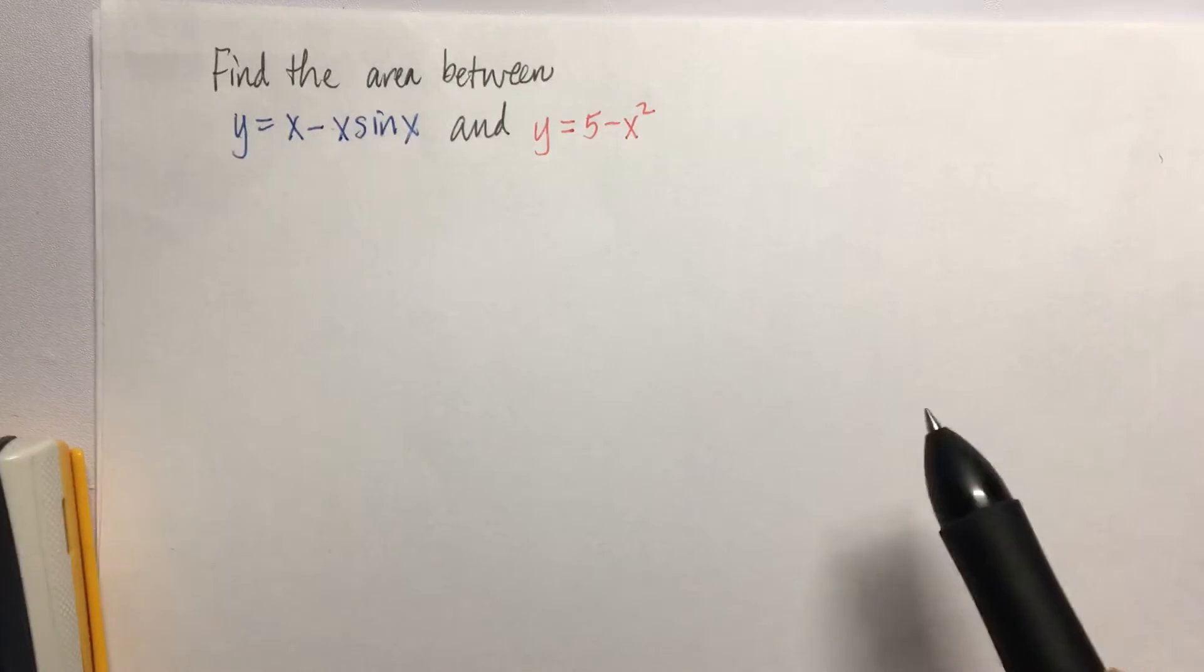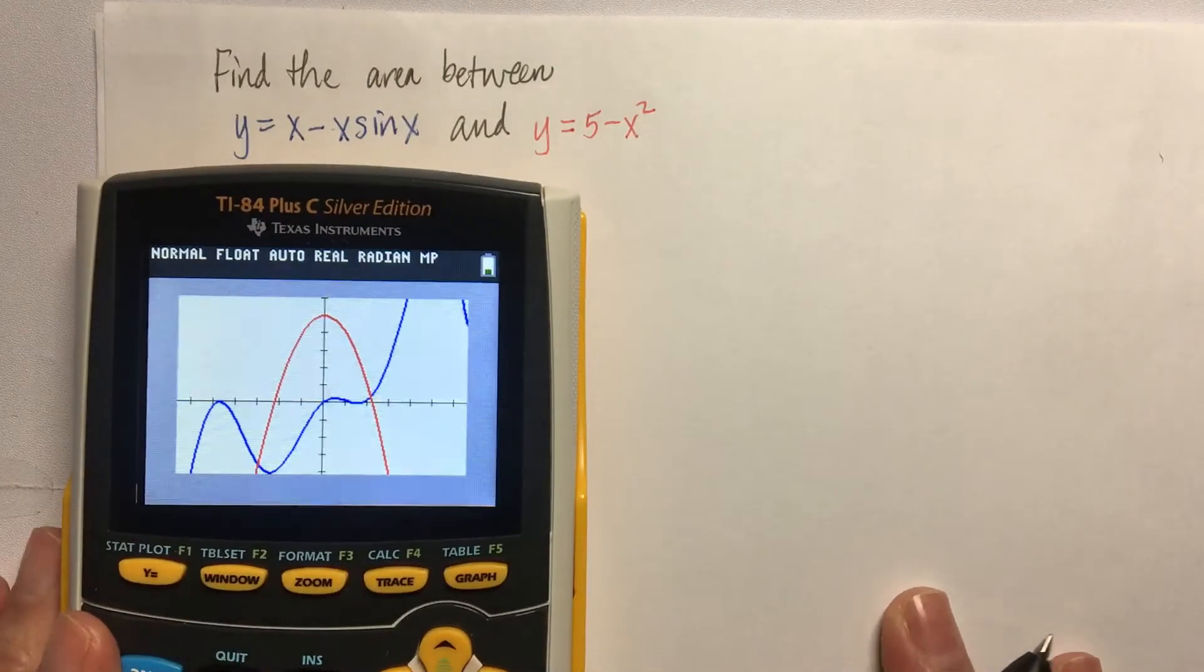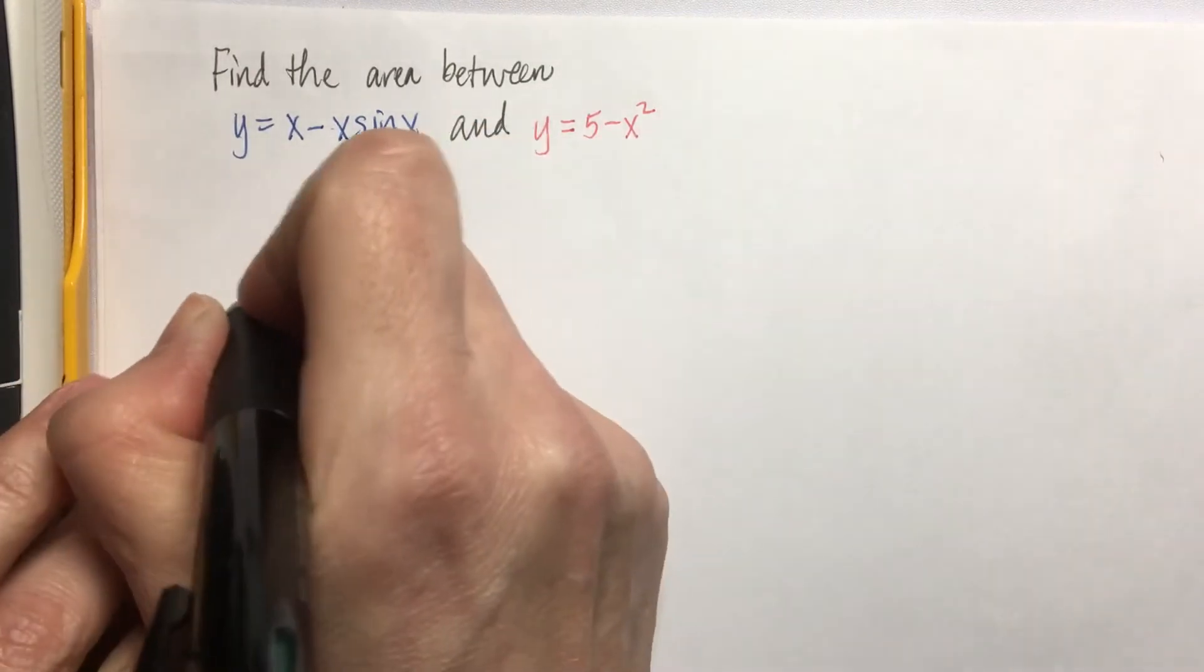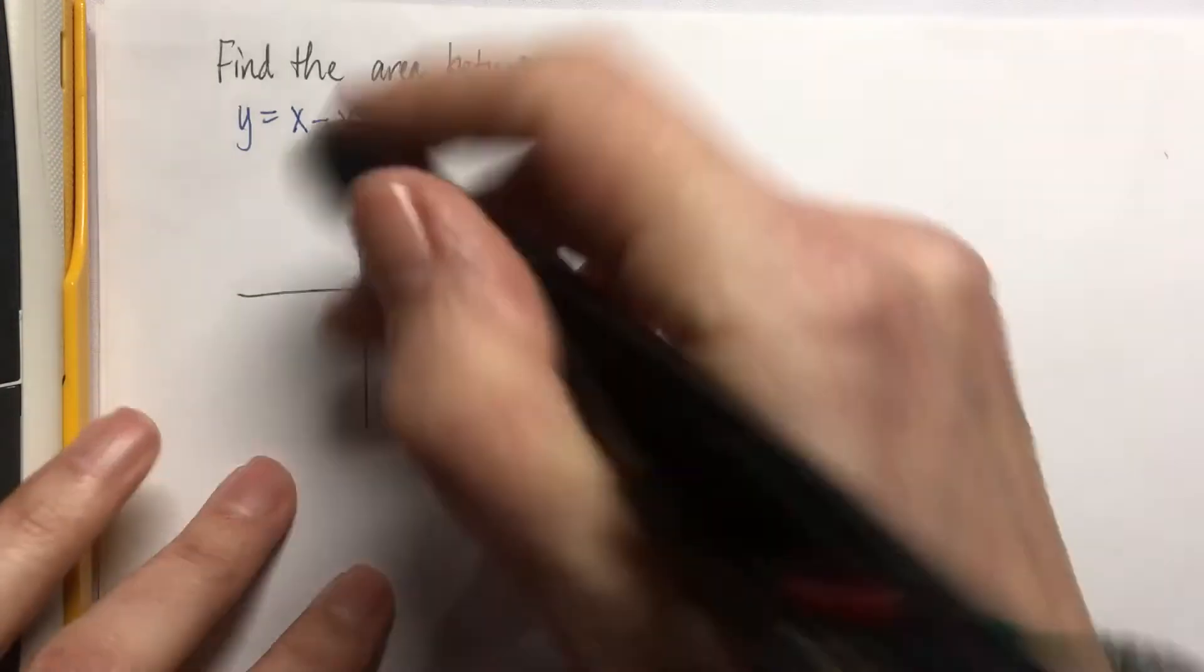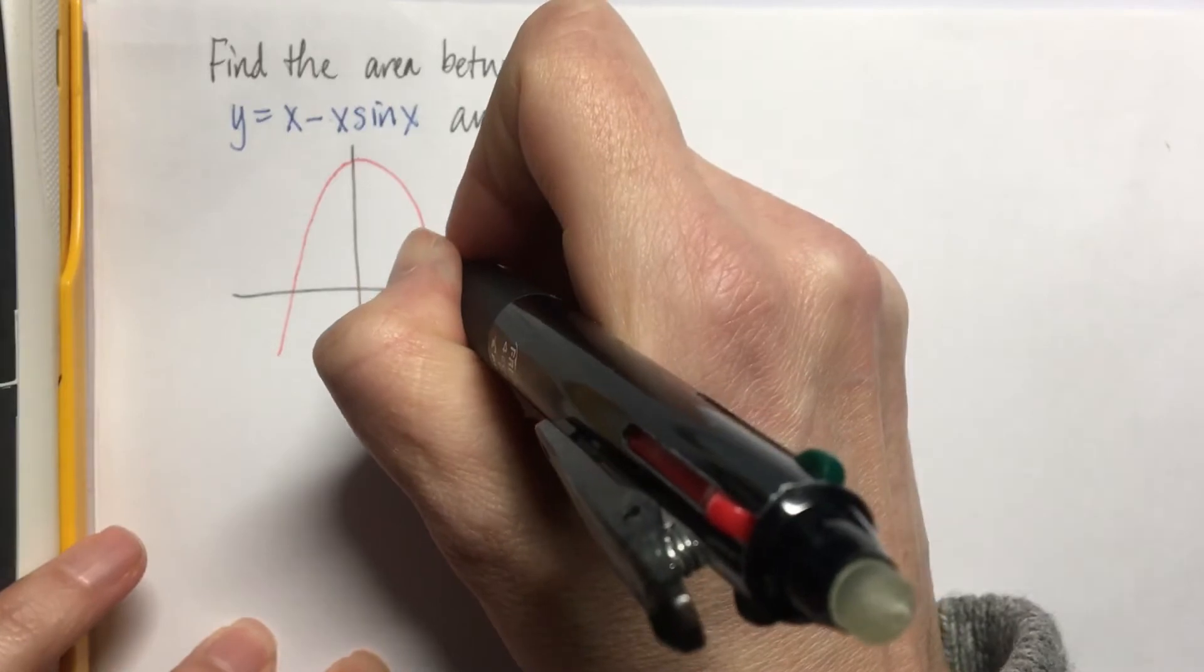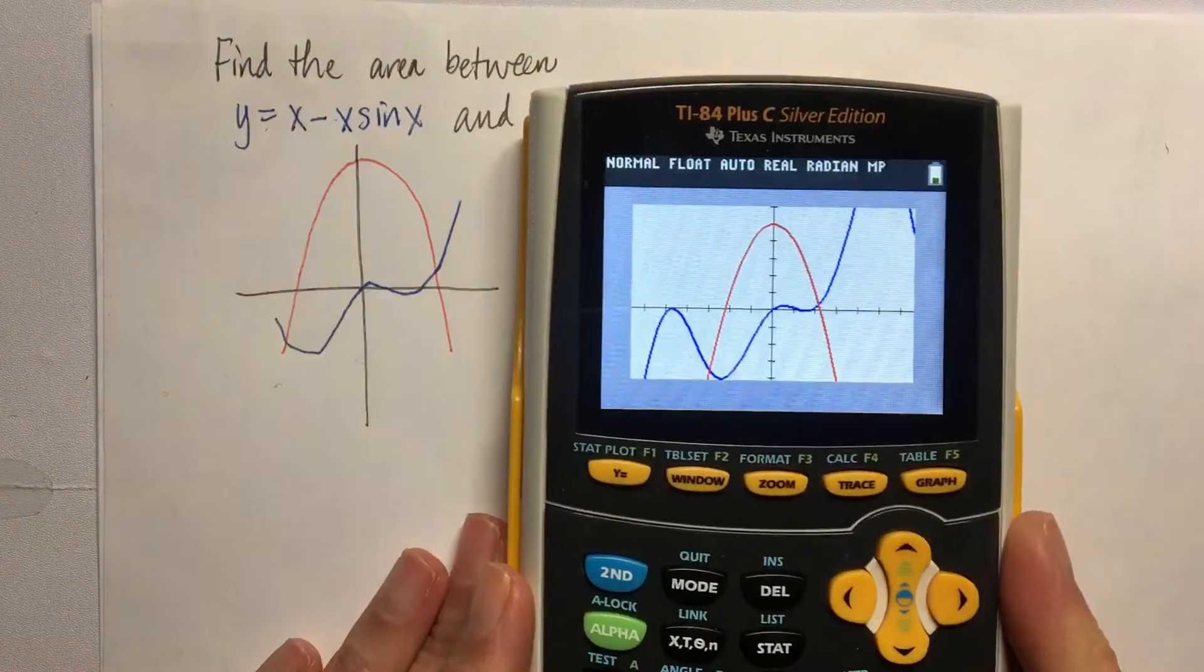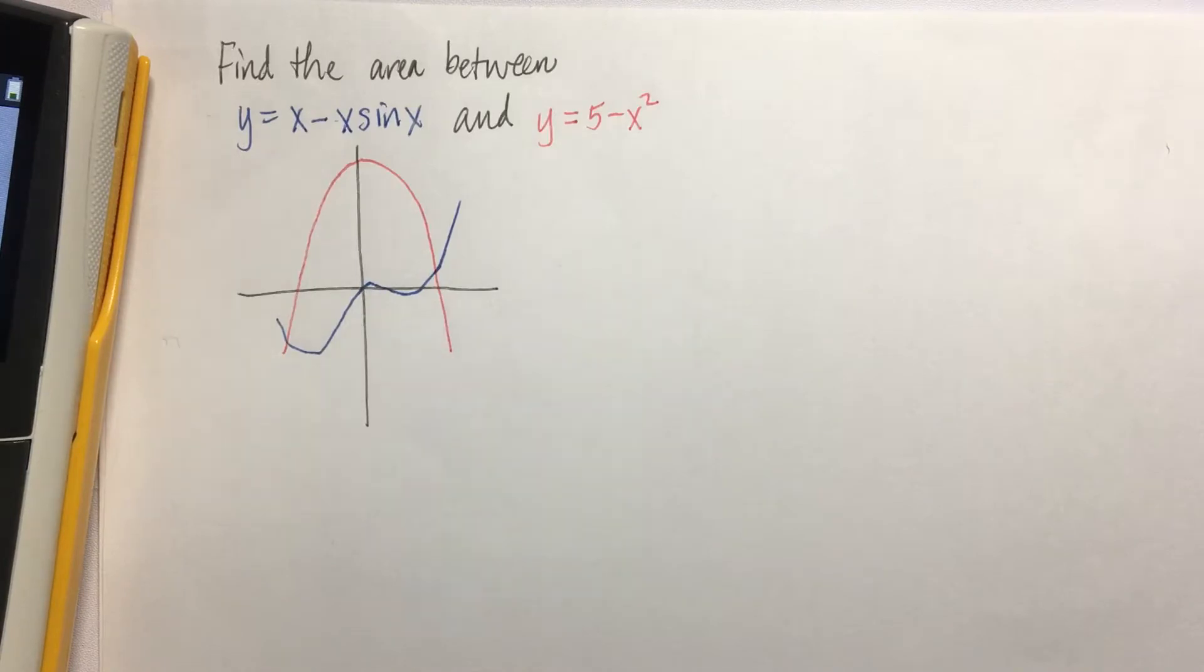So if we're looking at the area between y equals x minus x sine x and y equals 5 minus x squared, I've already graphed this. I'm going to just do a really fast sketch of it just so I can have something to work from. It doesn't have to be a great drawing. Good enough. They look exactly alike, right? The only reason I'm doing this is because it helps me to keep track of things.